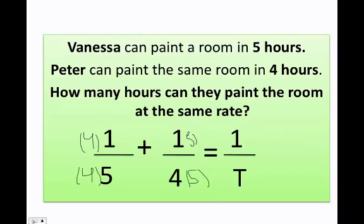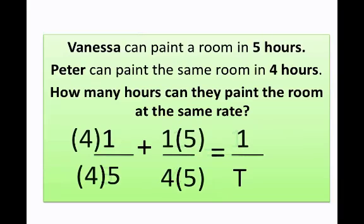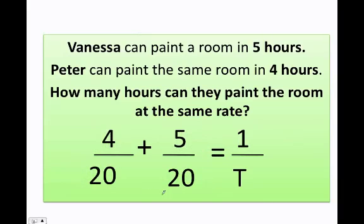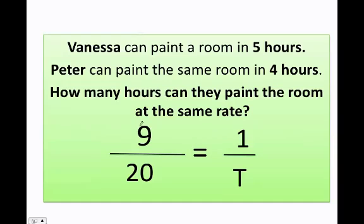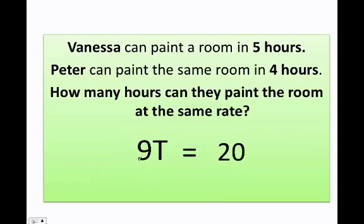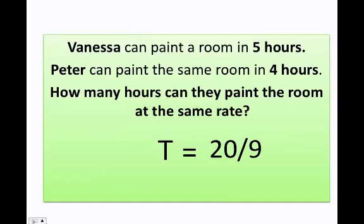That way I can have the same denominator, because four times five is 20 and four times five is 20. I also multiply the numerators: this gives me four, and this gives me five. So I get four over twenty plus five over twenty equals one over t. Since I have the same denominator, I keep it and add the tops: four plus five is nine. Now I cross-multiply and get nine times t equals twenty times one, then divide both sides by nine, giving t equals twenty over nine.